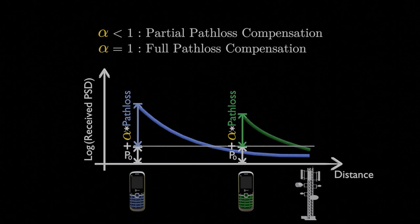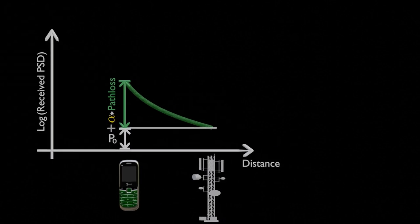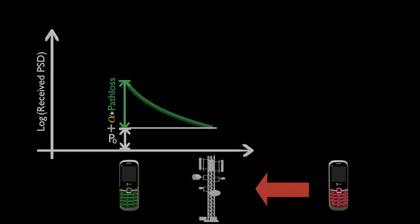So far, so good, right? Now, let's talk about the second problem. The base station might be getting high interference from UE's in neighboring cells, which can prevent it from correctly decoding the signals, even though the received PSD from its UE matches to the target PSD.